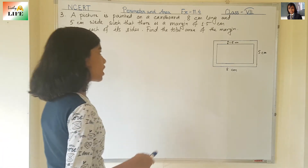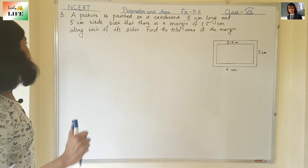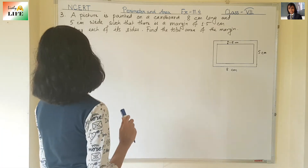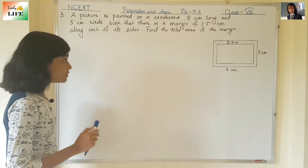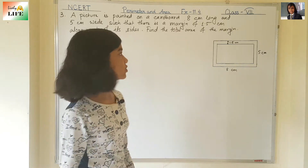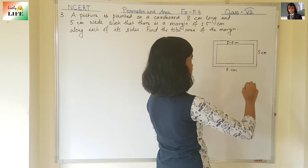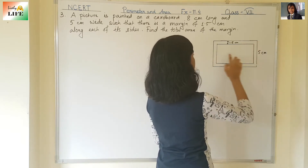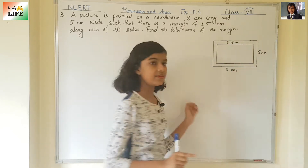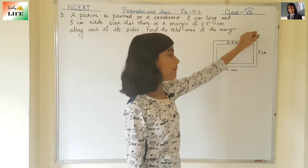A picture is painted on a cardboard 8 cm long and 5 cm wide such that there is a margin of 1.5 cm along each of its sides. Find the total area of the margin. You can see this is the cardboard which is 8 cm long and 5 cm wide, and the width of the margin is 1.5 cm. We need to find out the area of the margin.